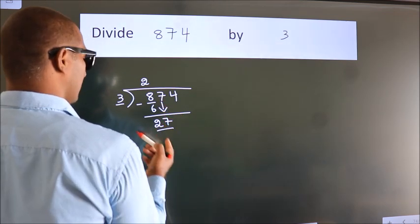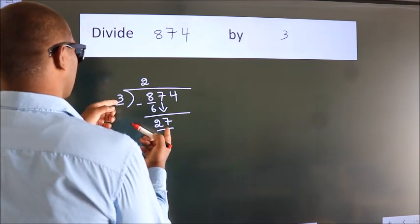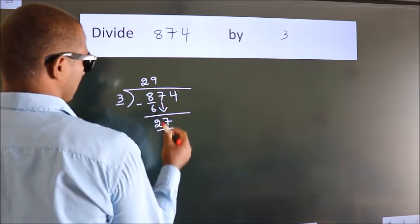So 27. When do we get 27? In the 3 table, 3 times 9 is 27.